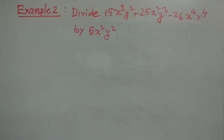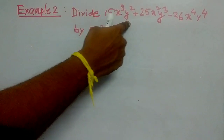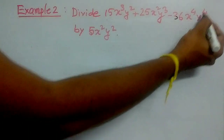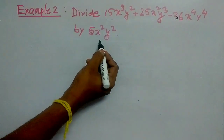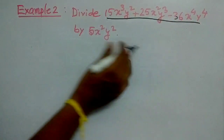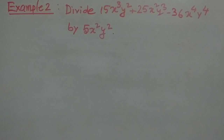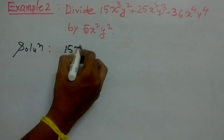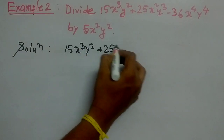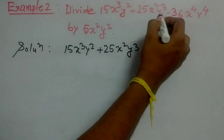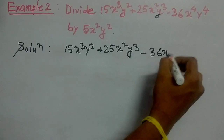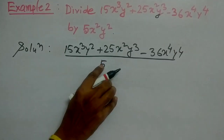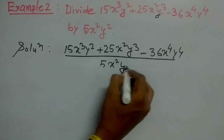Let's go for another problem. Here divide 5x cubed y squared plus 25x squared y cubed minus 36x to the power 4 y to the power 4 by 5x squared y squared. Here this is a polynomial and this is a monomial. So let us write it in this way.